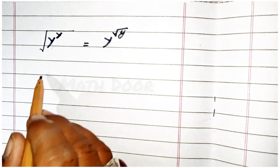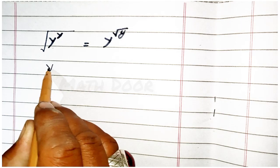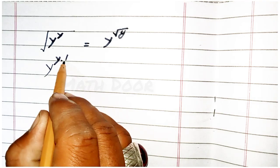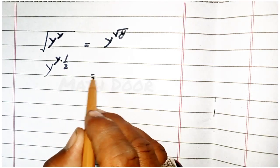First of all, we can write this one like as y power y times 1 over 2 is equal to